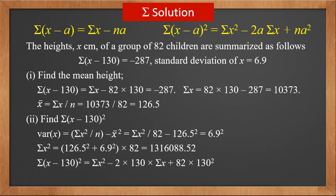Using the second property, we know sigma x minus 130 squared is sigma x squared, minus 2 times 130 times sigma x, plus 82 times 130 squared. Substitute in all the numbers and we get the answer as 4908.52. This is also the same as the previous approach.